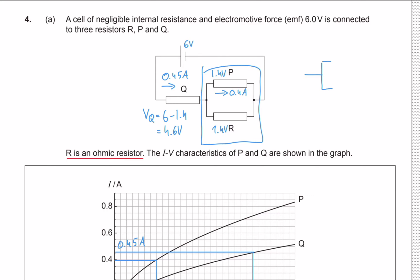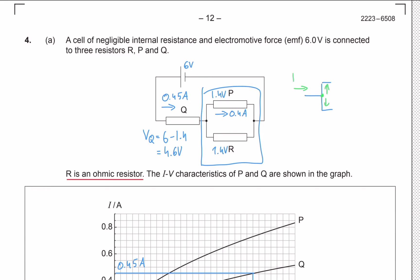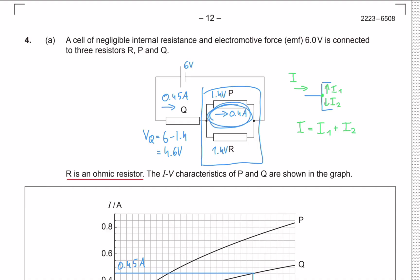Charge must always be conserved. At a junction, the current going in equals the current coming out. If we label the two branch currents i1 and i2, then the incoming current equals i1 plus i2. In our circuit, the total current coming into the junction is 0.45 amps, and the upper branch carries 0.40 amps, so the lower branch through R must carry 0.05 amps.